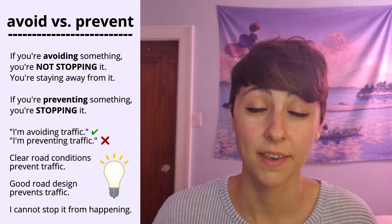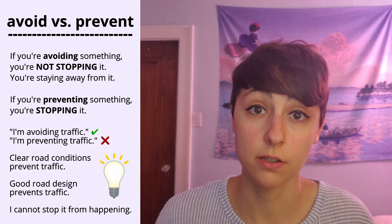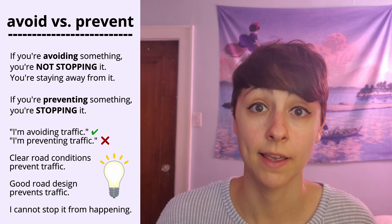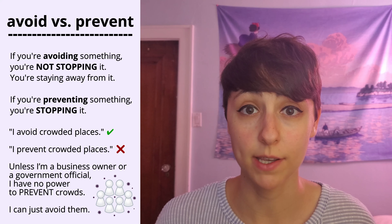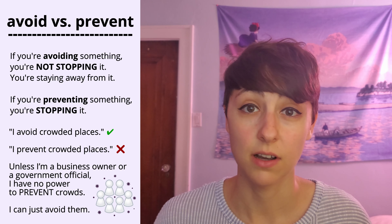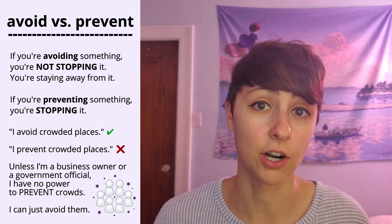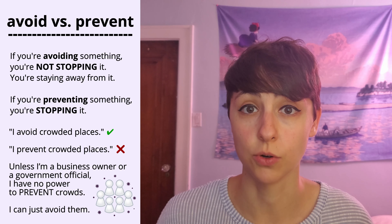I can avoid traffic, but it sounds strange to say I'm preventing traffic. The traffic is still happening whether I'm near it or far away from it. Clear road conditions prevent traffic. Good road design prevents traffic. I can't stop it from happening in the first place — I can only stay away from it and avoid experiencing it. Similarly, if I'm afraid of getting sick, I can avoid crowded places — I can stay away from them. But I can't prevent crowded places, unless I'm a business owner or government official who can make a rule about the number of people allowed in a room. I cannot prevent crowded places; I only have the ability to avoid them.